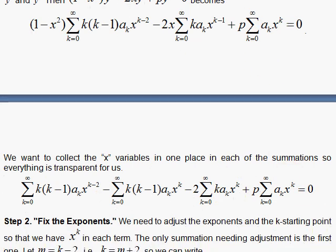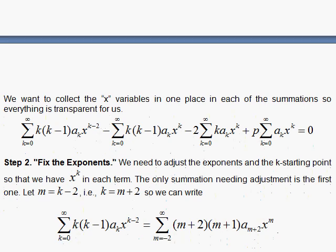Step 2, fix the exponents. We want these x's to have the same power of k so we can have the sum in sync with each other, each of the series. So we let m equals k minus 2, which is the same as saying k is m plus 2. And then this first power series here, k equals 0, gets replaced with m equals minus 2.